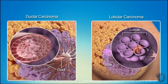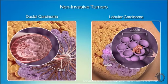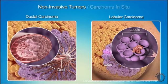When malignant cells form in ducts or lobules but have not invaded the surrounding tissue, the tumors are referred to as non-invasive tumors. These masses are also called carcinoma in situ, a name that refers to a Latin phrase that means "in position."